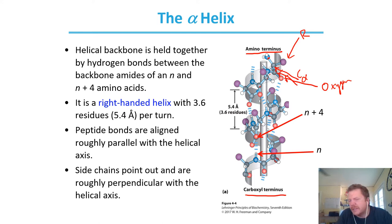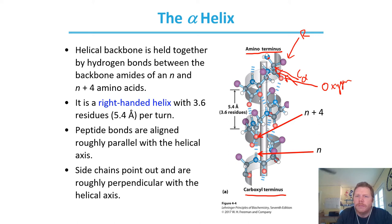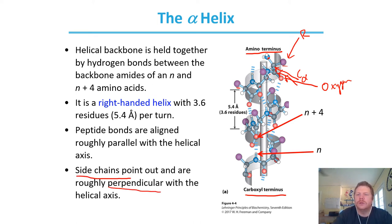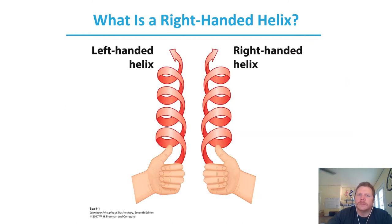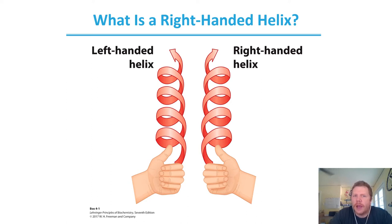You can kind of see that — it's easier to see on the ones not in the foreground or background. These purple spheres are pointed outward from the helix. So side chains or R groups point out and are perpendicular to the helical axis. One thing we breezed over is that an alpha helix is a right-handed helix.